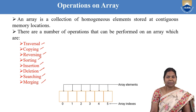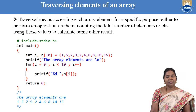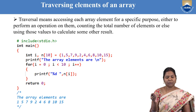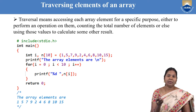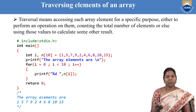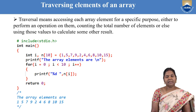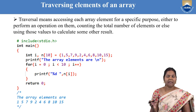Let us discuss these operations one by one. What do you mean by traversing the elements of an array? Traversing means accessing each and every element of the array in a particular order from left to right for a specific purpose. For example, if you want to perform some operation on the elements or if you want to count how many elements are in the array.